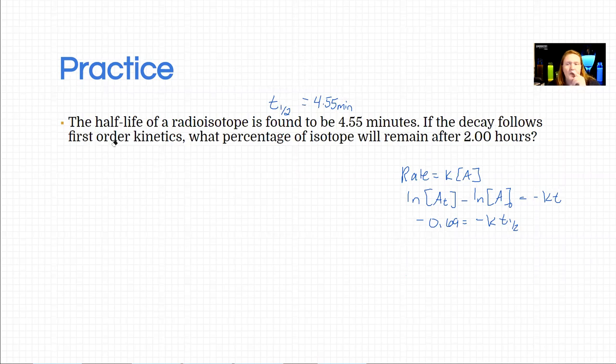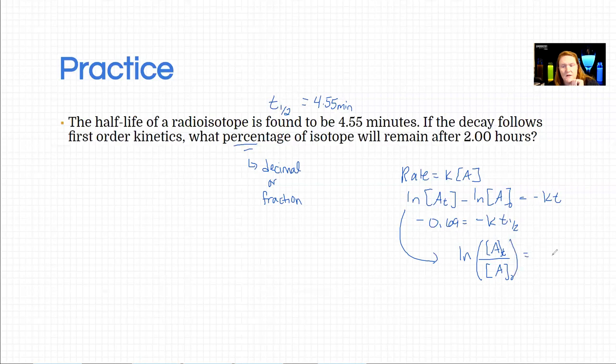So then it says, if the decay follows first order kinetics, what percentage? So percentage to me means we need either a decimal value and then multiply by a hundred, or maybe a fraction because we can turn fractions into decimals. Okay, so what percentage of isotope will remain after two hours? So none of these have a fraction in them, but I remember I just briefly mentioned that we can use this version which is a fraction. So that might be handier than all the others.